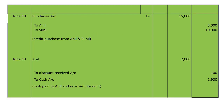June 18: purchased goods from Anil 5,000 and from Sunil 10,000. Since names are mentioned, we assume these are credit purchases. Entry: Purchases account debited 15,000, to Anil 5,000, to Sunil 10,000. Narration: credit purchases from Anil and Sunil.